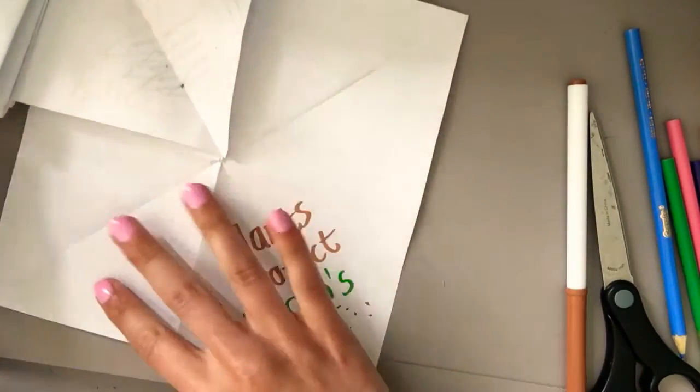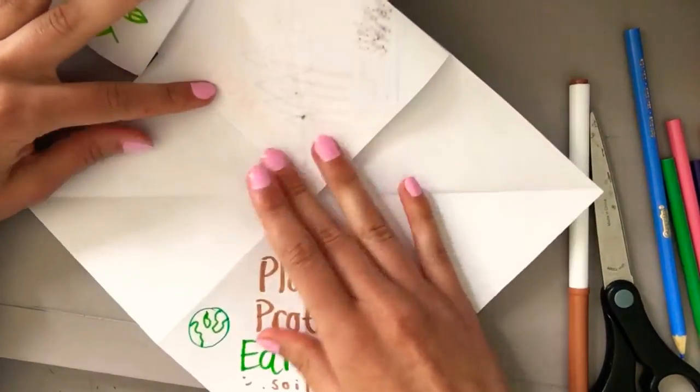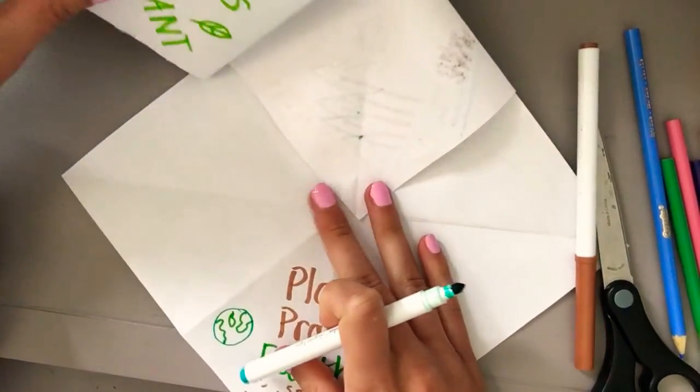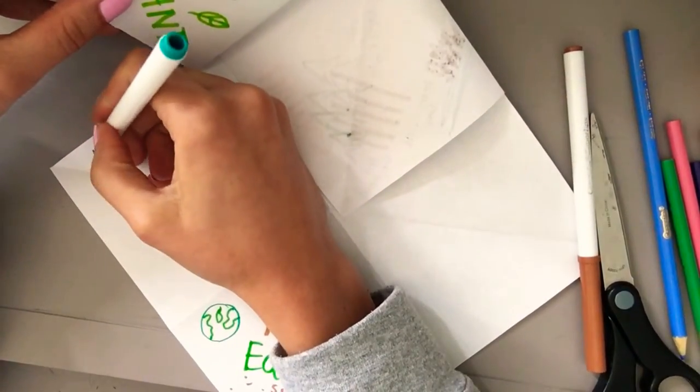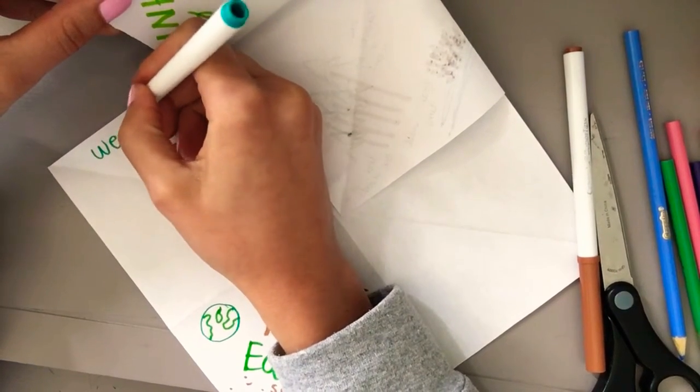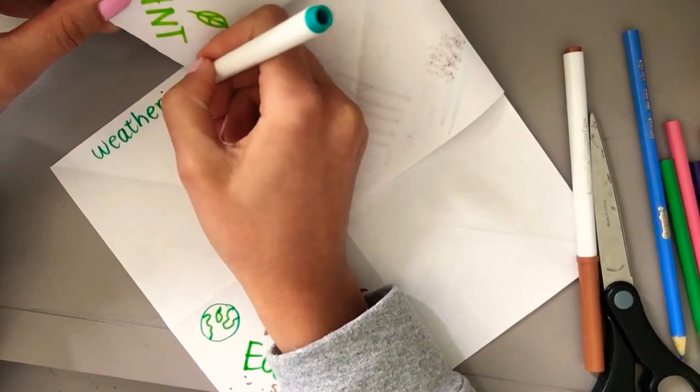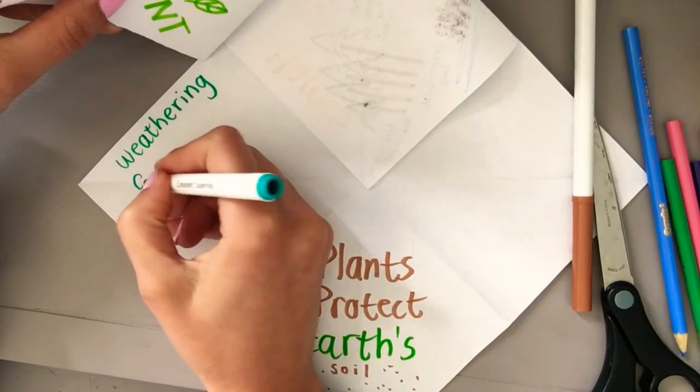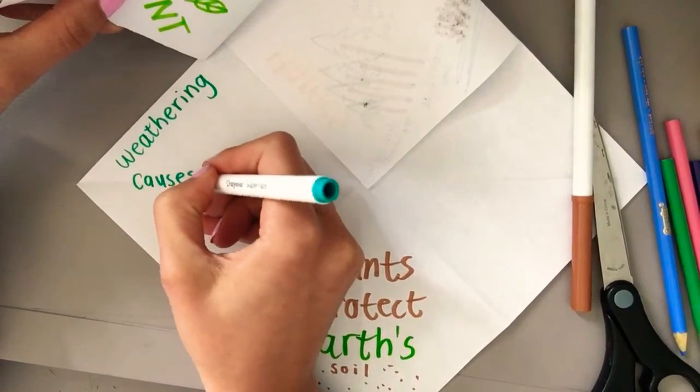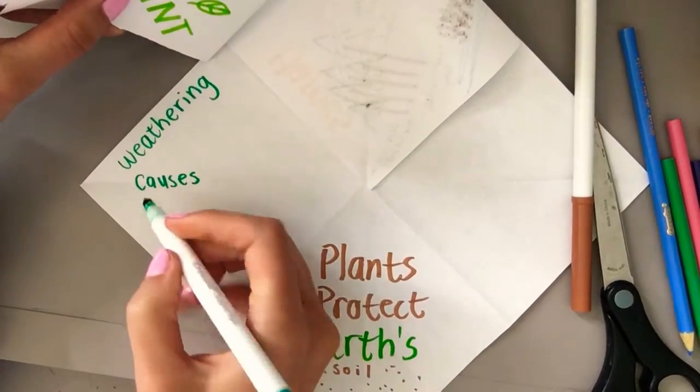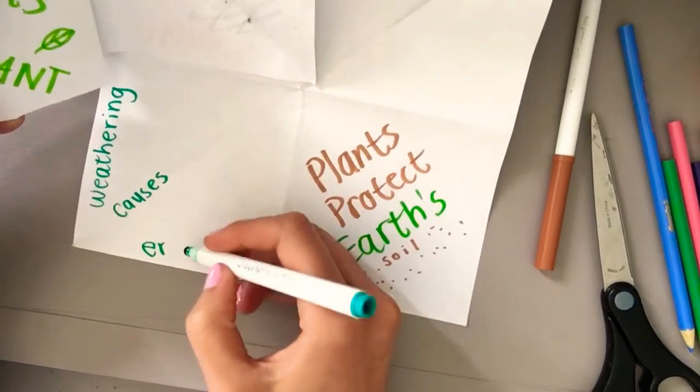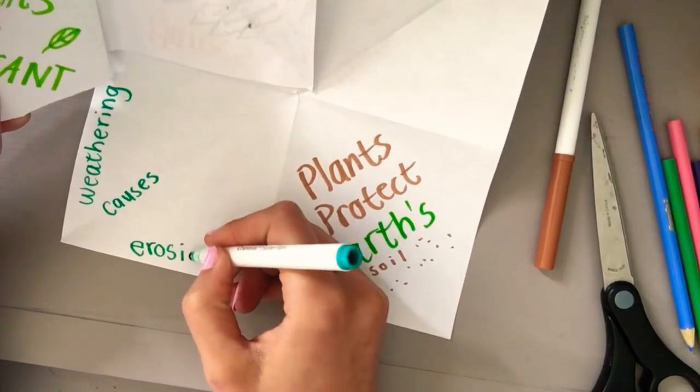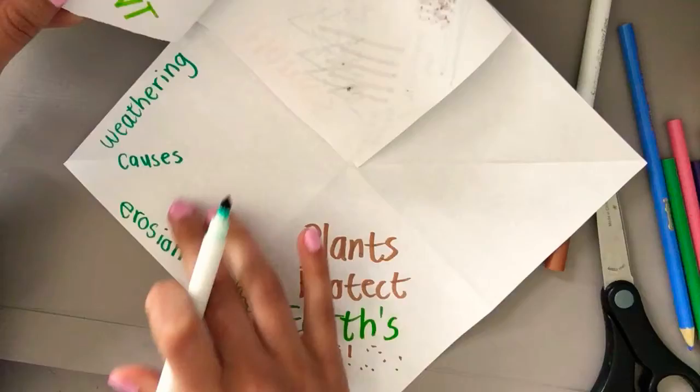Now I have the left and right. On the left, what I want to do is write three words. These are three new words to you. The first one is weathering. I will explain this word. It has the word weather in it. So you can probably guess what it has to do with. And then on the crease, I'm going to write causes. That means makes happen. Weathering, causes. And then down here I'm writing E-R-O-S-I-O-N. Erosion. Weathering causes erosion. Let me explain this to you.